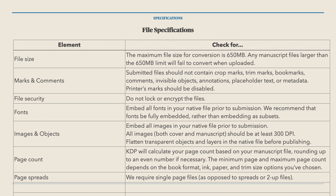File size: the maximum limit is 650 megabytes. Marks and comments: no crop marks, trim marks, bookmarks, invisible objects, annotations, placeholders, metadata, or printer marks — these should be disabled. You'll see that option in your export settings in Affinity Publisher. You can enable printer marks but don't. KDP hates them and your manuscript will be rejected.